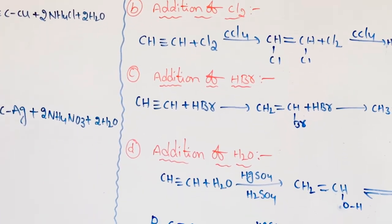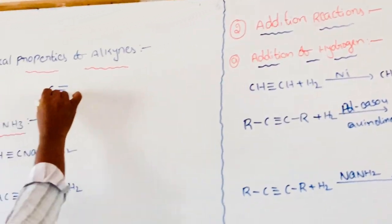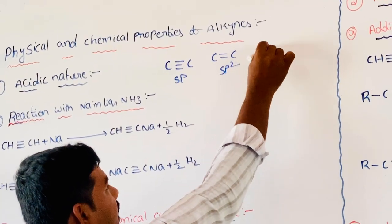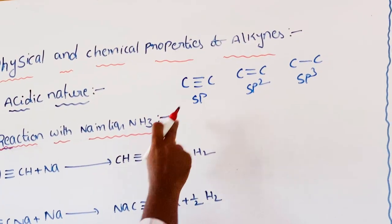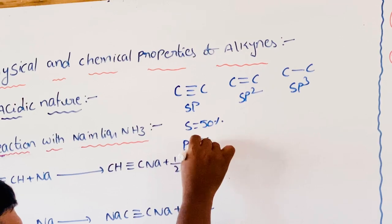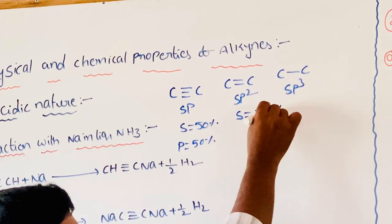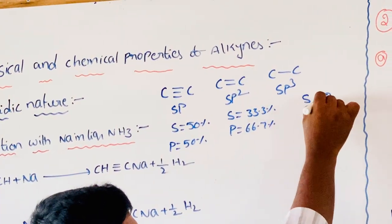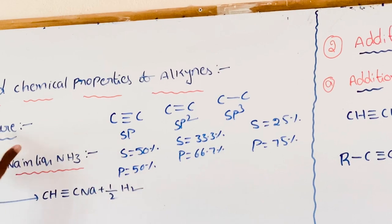First, acidic nature of alkynes. Alkynes are acidic in nature due to the carbon-carbon triple bond with SP hybridization. For double bonds, SP2 hybridization applies, and for single bonds, SP3 hybridization. SP hybridization: S character is 50%, P character is 50%. SP2 hybridization: S character is 33.3%, P character is 66.7%. SP3: S character is 25%, P character is 75%. As S character increases, acidity also increases.